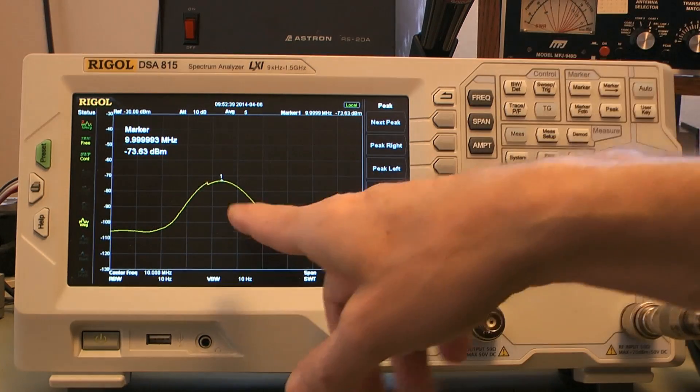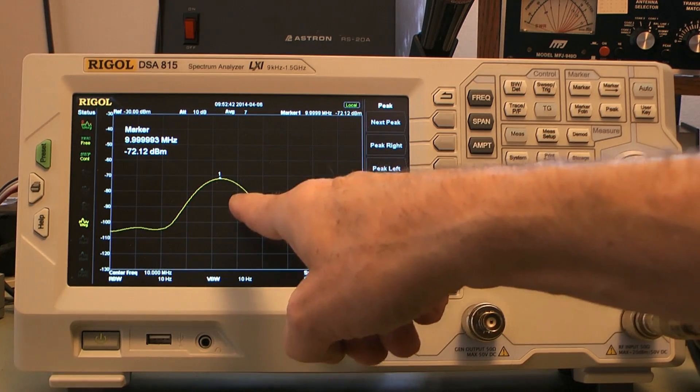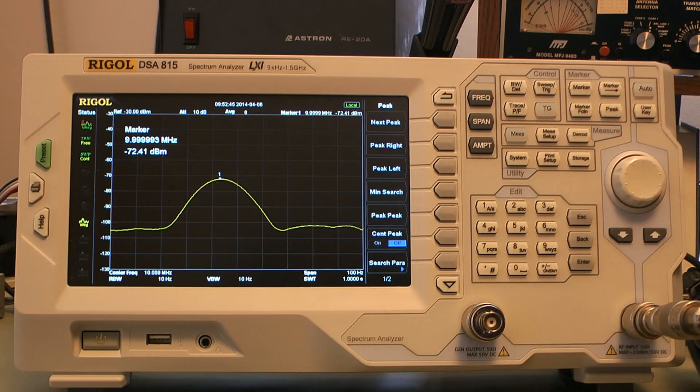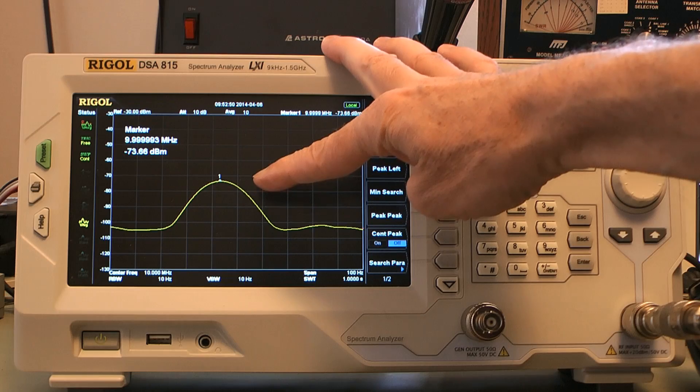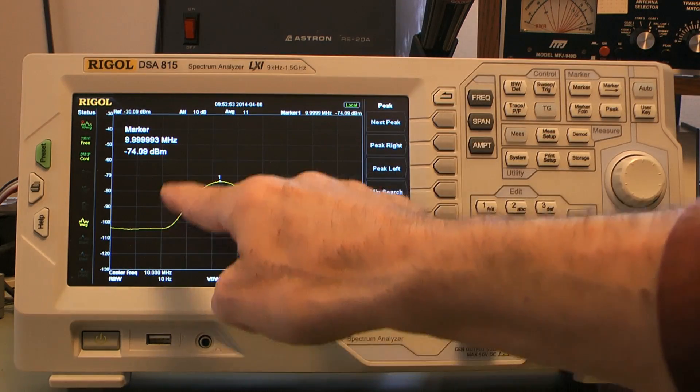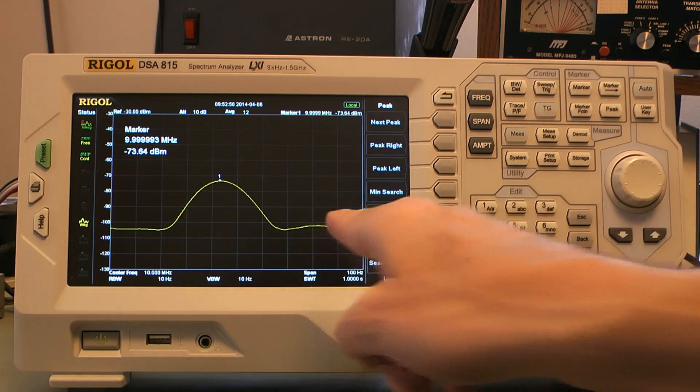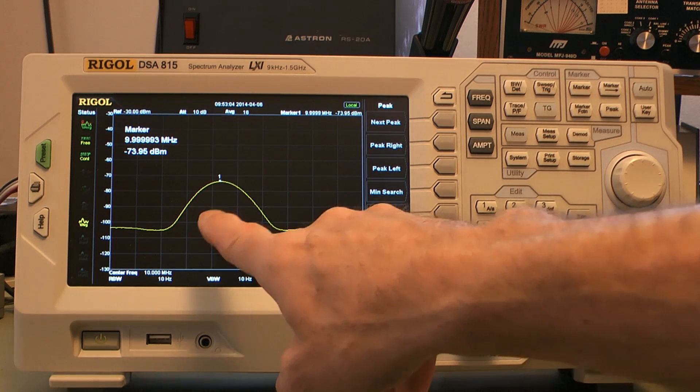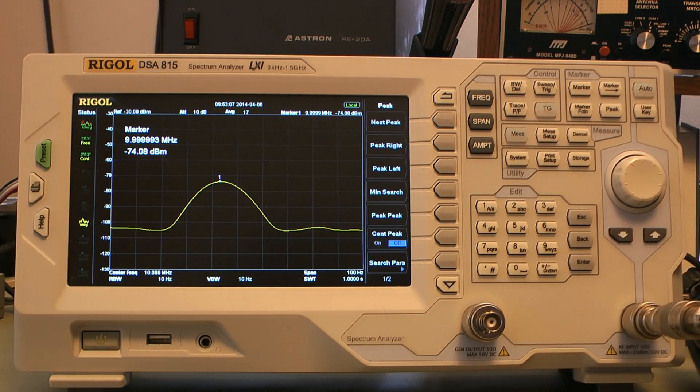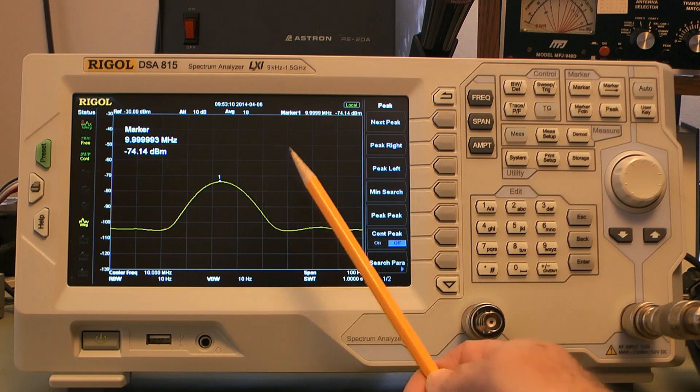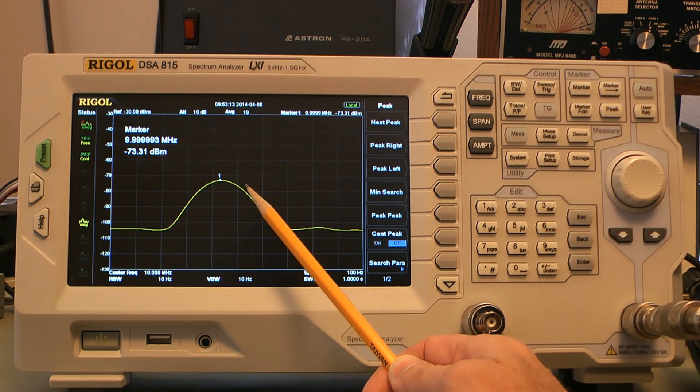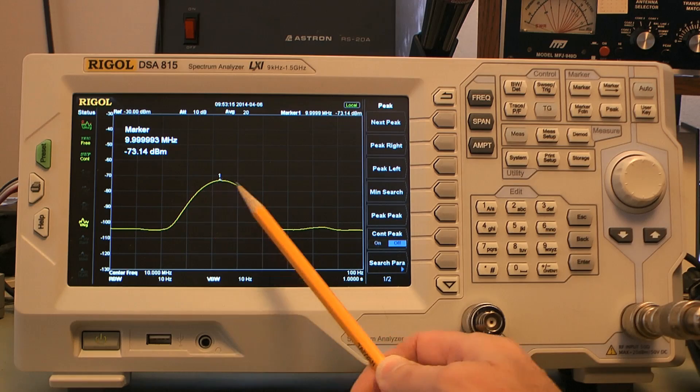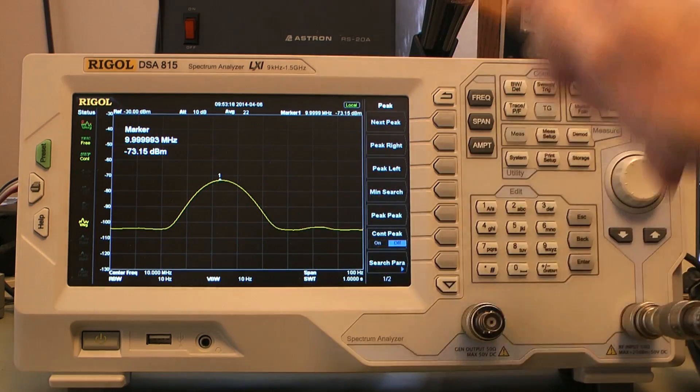It's going to start averaging these readings so that I don't have the signal jumping all over the place. It will do two things for me. One, the amplitude will settle down relatively. And two, the sides of the skirt of the signal will also settle down. Any given snapshot that you get during the one second span can give you a really lopsided signal. I want a very symmetrical signal because I'm going to use a trick to tell how far out of calibration I am by moving the reference up and down.